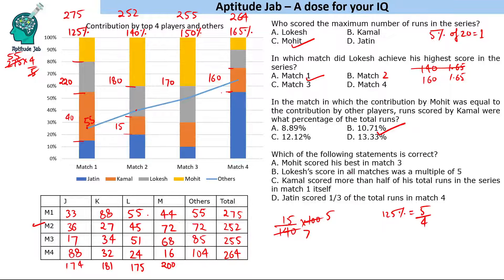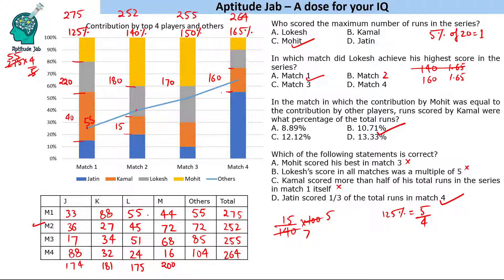Question 4: Which statement is correct? Mohit scored his best in match 3 — incorrect, he scored best in match 2. Lokesh's score in all matches was a multiple of 5 — incorrect. Kamal scored more than half his total in match 1 — Kamal's total is 181, so that's incorrect. Jatin scored one-third of total runs in match 4: total was 264, one-third is 88, and Jatin did score 88 in match 4 — correct. That is the answer.